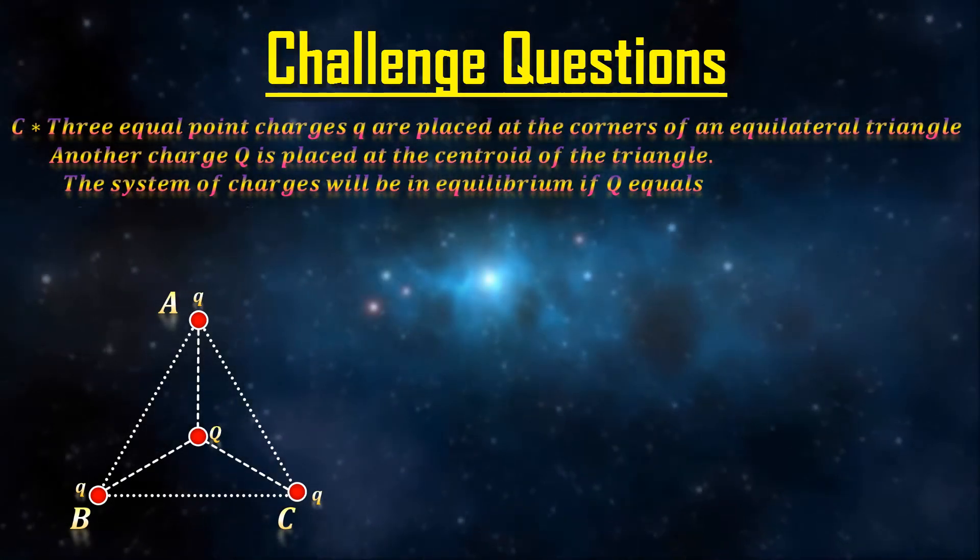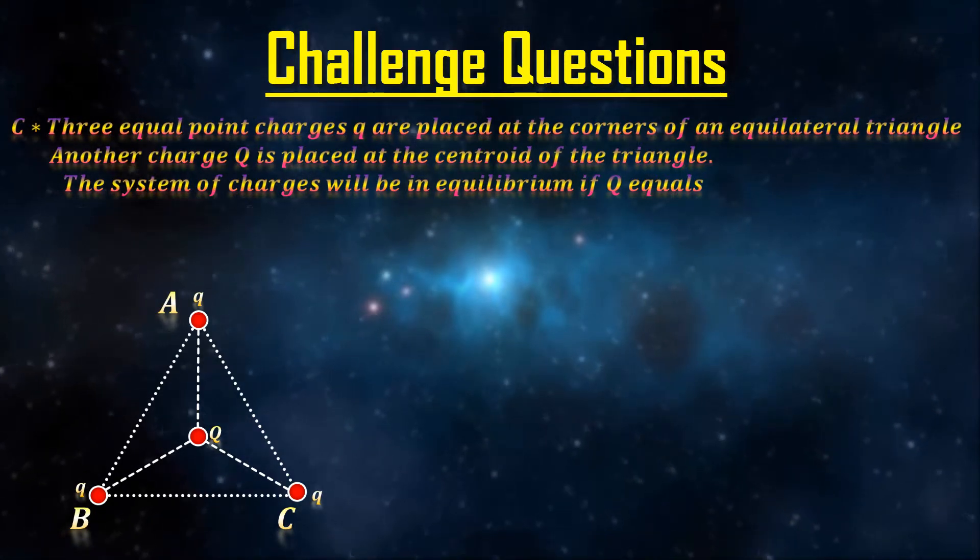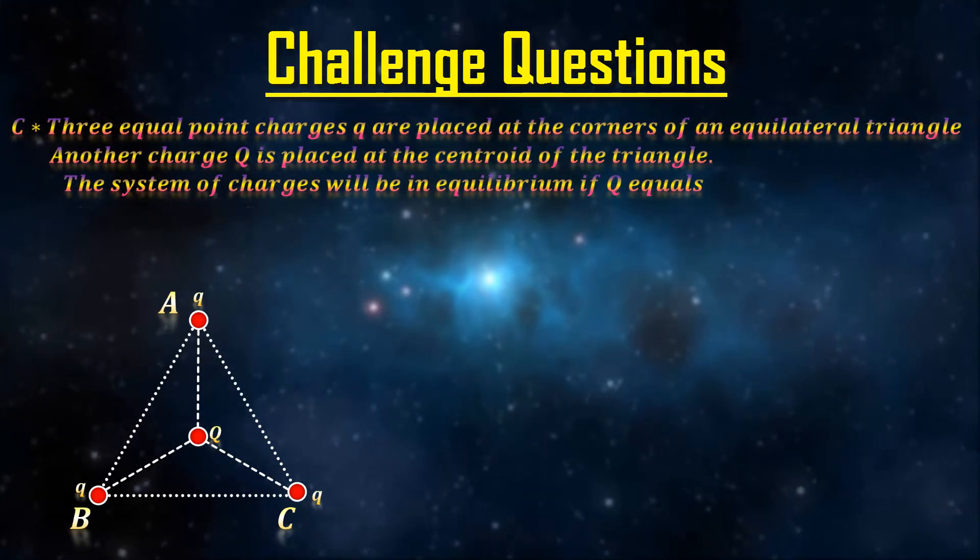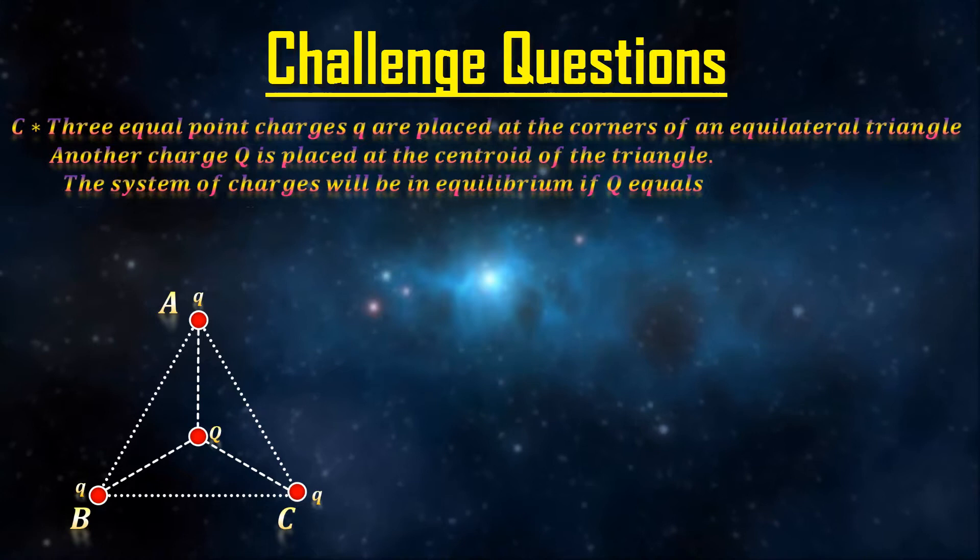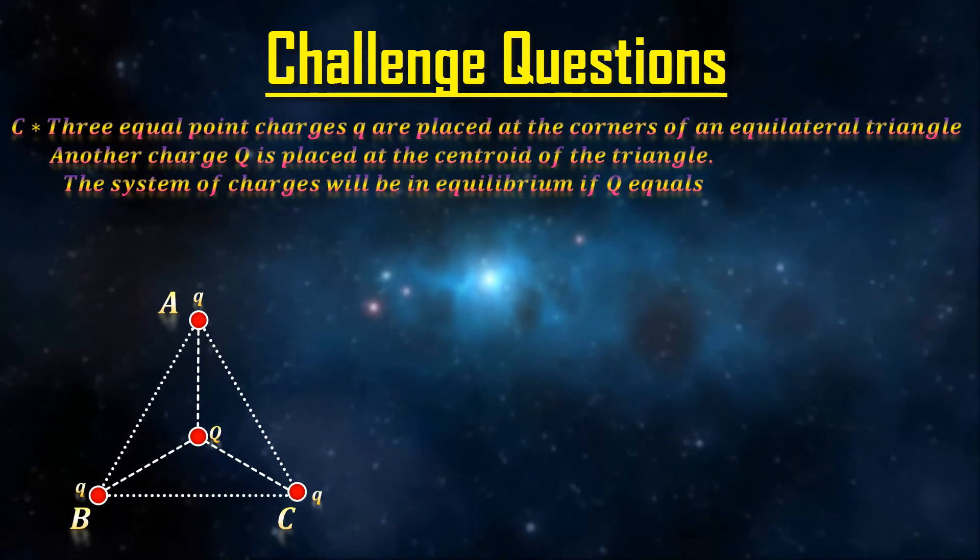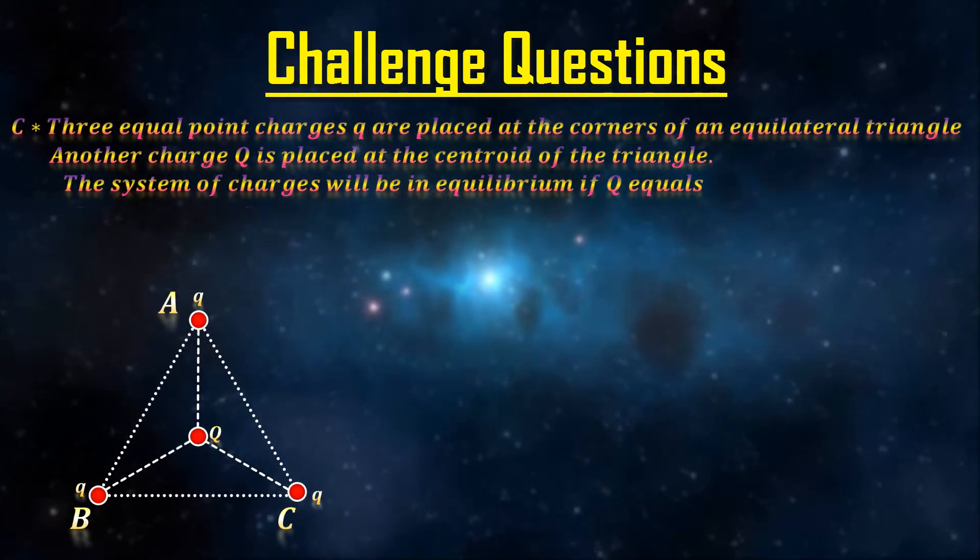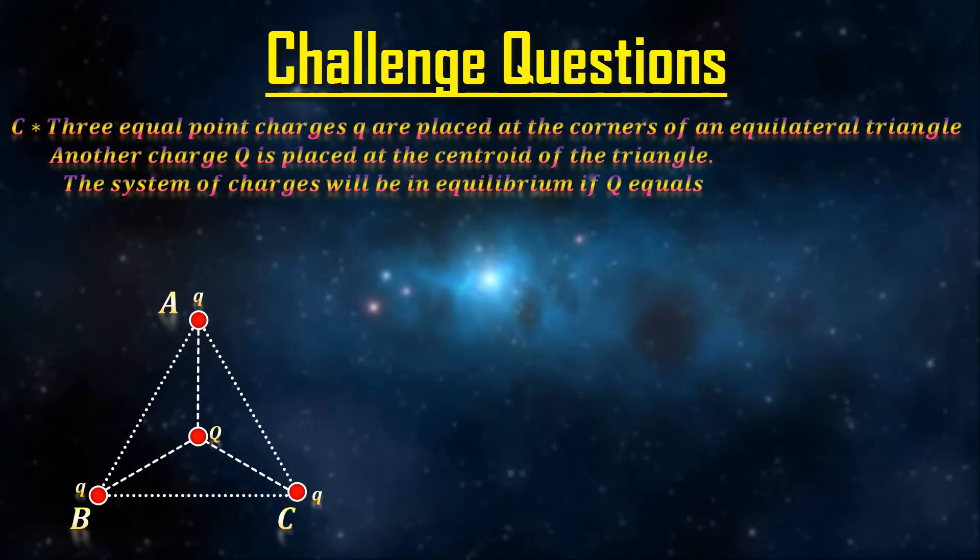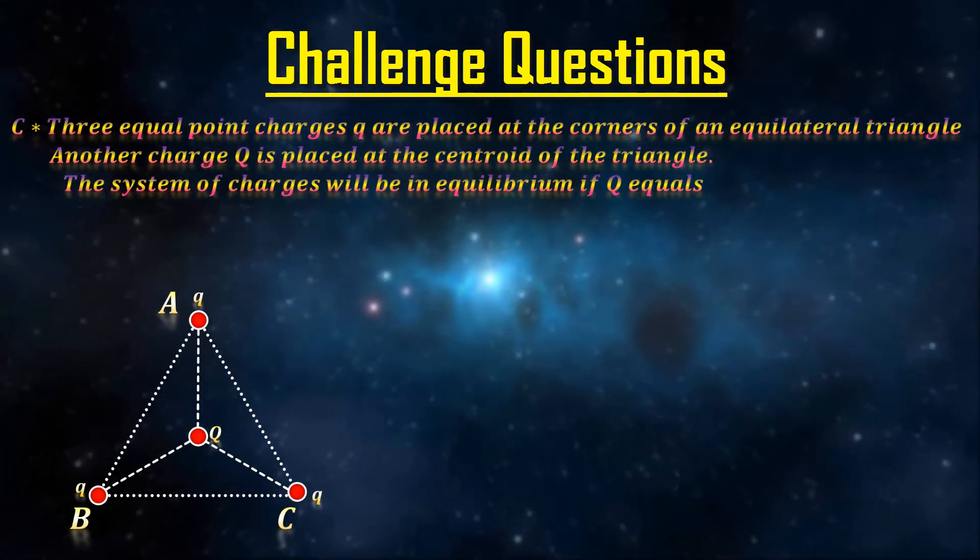You have three q's situated at the corners of the equilateral triangle. And the fourth charge, big Q, is placed at the center. You need to calculate the value of big Q, such that the entire system is in equilibrium.